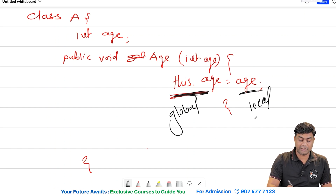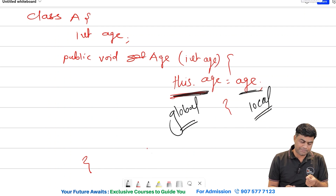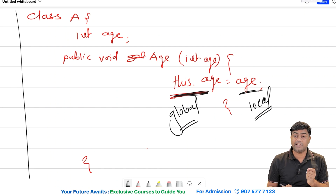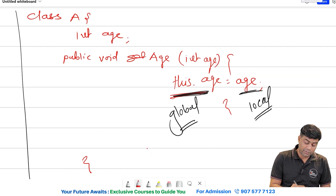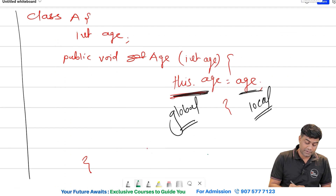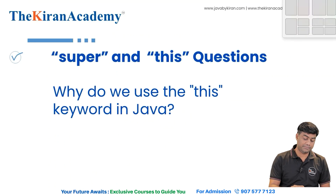If you explain it to the interviewer this way, he will understand that you are clear with the concepts. Take a copy and pen in an interview many times and explain with examples — the interviewer will be really impressed. So the simple concept here is: 'this.h' is global and plain 'h' is local.